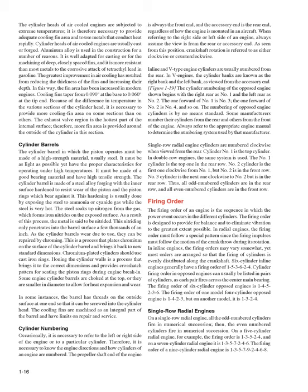The firing order of an engine is the sequence in which the power event occurs in the different cylinders. It is designed to provide balance and eliminate vibration to the greatest extent possible. In radial engines, the firing order must follow a special pattern following the motion of the crank throw during rotation. Six-cylinder inline engines generally have a firing order of 1, 5, 3, 6, 2, 4. The firing order of six-cylinder opposed engines is 1, 4, 5, 2, 3, 6. For 4-cylinder opposed engines, one model uses 1, 4, 2, 3, and another uses 1, 3, 2, 4 — always refer to the engine manual.